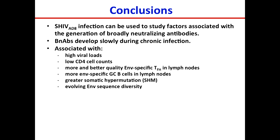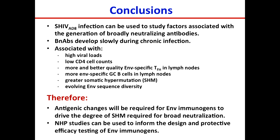SHIV-88 infection can be used to study factors associated with the generation of broadly neutralizing antibodies. They develop slowly during chronic SHIV infection and are associated with high viral loads, low CD4 T cell counts, more and better quality envelope-specific T follicular helper cells, more envelope-specific germinal center B cells with greater somatic hypermutation, and envelope sequence diversity driving much of this. Antigenic changes will probably be required for envelope immunogens to drive the degree of somatic hypermutation required for broad neutralization, and these NHP studies can be informative in that process.